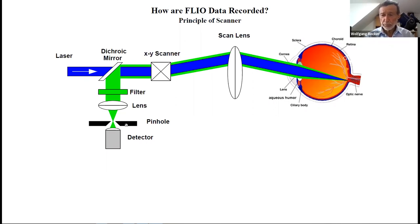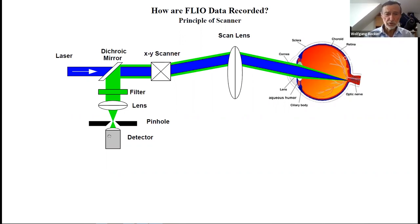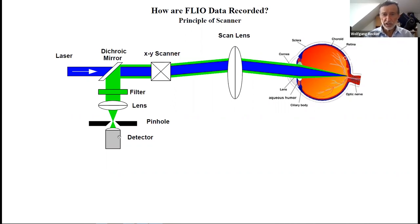The returning light passes a filter that splits the emission light from the excitation light, then through a lens that projects the fluorescence light into a pinhole. By this pinhole, you select just a little area around the excited spot and put it on the detector. This pinhole is very important because you have a lot of scattered light in the eye and fluorescence from the cornea and lens of the eye. You want to suppress this light so that only the light induced on the fundus reaches the detector.